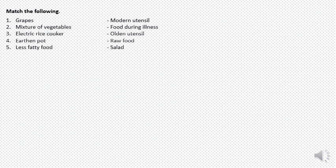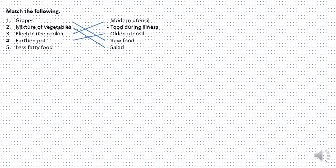Match the following. Grapes — raw food. Mixture of vegetables — salad. Electric rice cooker — modern utensils. Earthen pot — olden utensils. Less fatty food — food during illness.